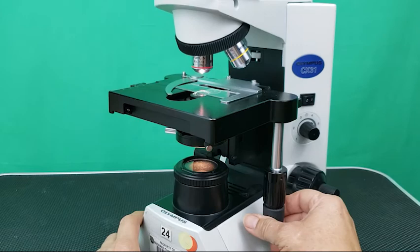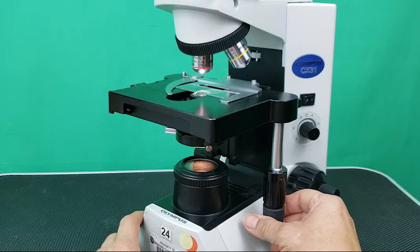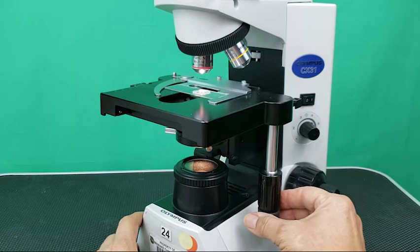If you are unable to focus the letter E with the fine adjustment knob, go back to the previous step. Again, make sure the letter E is centered using the X and Y knobs.